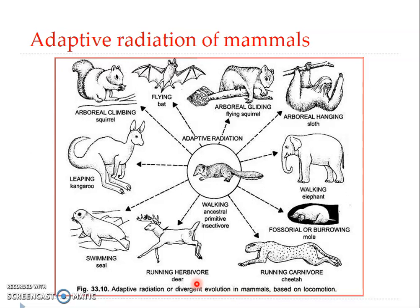The third group is unguligrade. Here, animals walk and run on the tips of their fingers and toes, which are shielded by hooves. In digitigrade, the digits touch the ground, while in unguligrade, only the tips of fingers and toes touch the ground. This includes all artiodactyls and perissodactyls — horses, cattle, sheep, buffalo, zebras, etc. Both herbivores and carnivores can fall under the cursorial group.